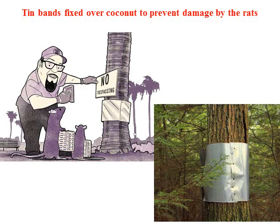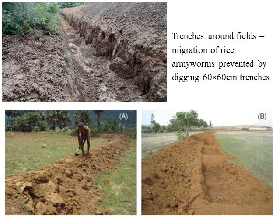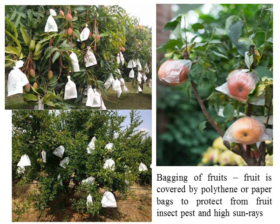Tin bands fixed over coconut or palm trees avoid the attack of rodents like rats or squirrels — this is a very common practice in coconut growing areas to avoid rat attack. Pasting with an oily or sticky material like grease or sticky bands prevents the upward movement of insects from the ground to the canopy. This is very effective against the control of mealybugs in grape, pomegranate, and custard apple. Digging trenches around the fields is also an important method to prevent migration of army worm from one field to another, using 60 by 60 cm trenches.